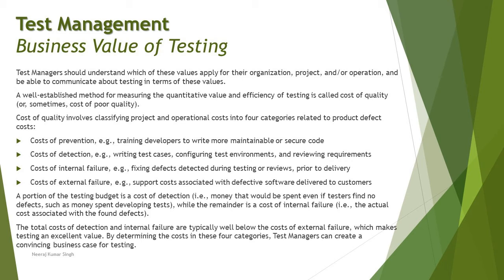The fourth category is cost of external failure — post-release support cost associated with defective software delivered to the customer. Generally the more calls you receive and service staff you send to resolve issues at customer locations, the more that cost grows. This cost is charged against the project because you're assisting real users to ensure they retain and continue using the product. These four categories together determine the overall cost of quality of a product. A portion of the testing budget is cost of detection — money spent even if testers find no defects, such as money spent developing test cases.